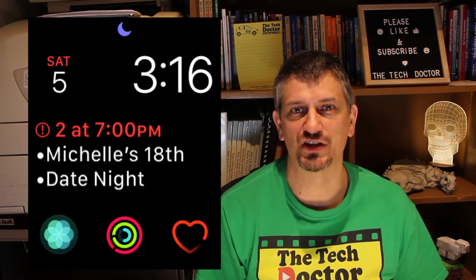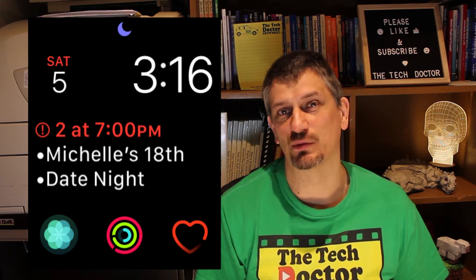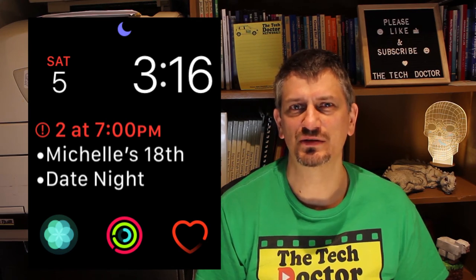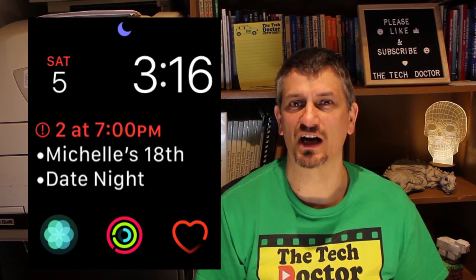This is the watch face that I chose. I wanted the time up the top right corner and the date up the top left. My calendar takes up the middle, and then the three dots down the bottom is the breathe reminder, my activity monitor, and then bottom right is heart rate.